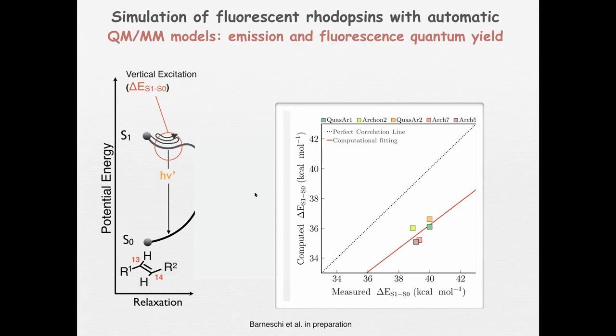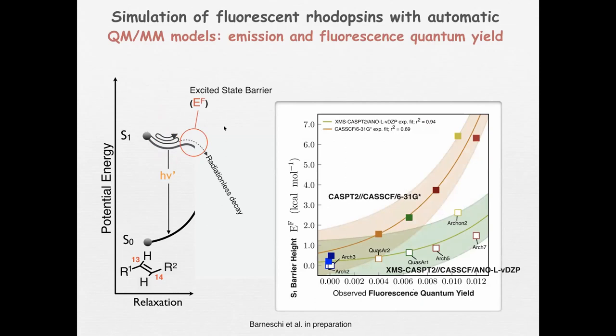Those models are totally automatic, not manually modified after construction. We do pretty well in computing the absorption maxima, which range from blue-green to red. What is really interesting is the fluorescence: we predict a much narrower range of emission compared to absorption, and yes, we do actually produce this narrower range for these proteins. For the fluorescence intensity, we do not yet have a way to predict the fluorescence quantum yield directly, but we hypothesize that the quantum yield is proportional to the excited-state lifetime, which depends on a barrier restraining the molecule from relaxing along the excited-state potential energy surface. We evaluated this barrier and find an exponential relationship between barrier height and fluorescence quantum yield.